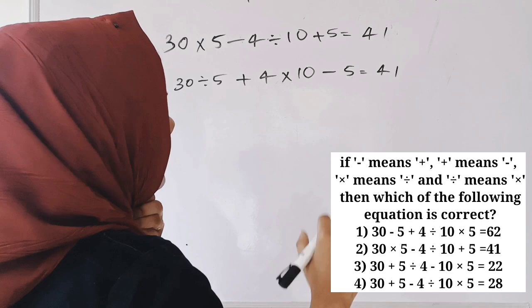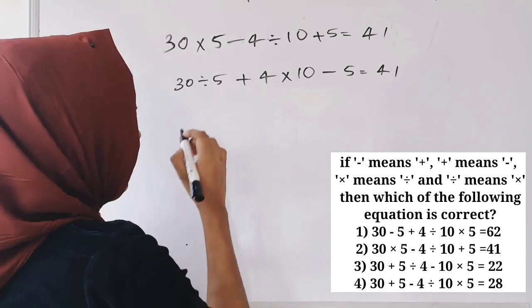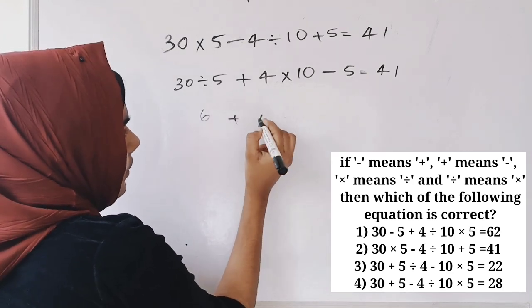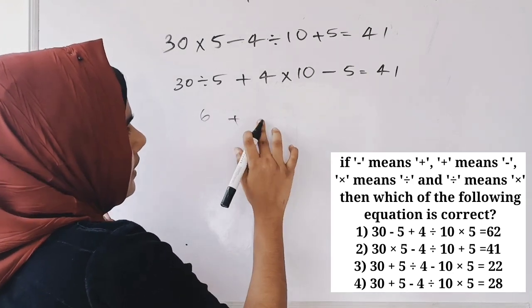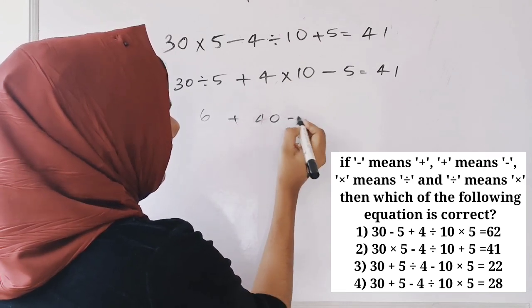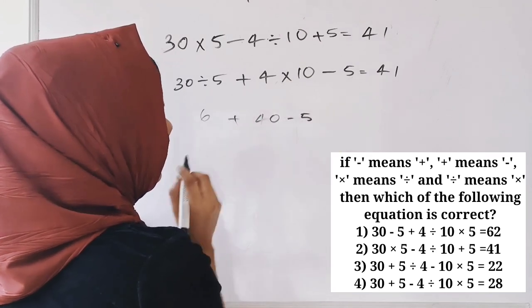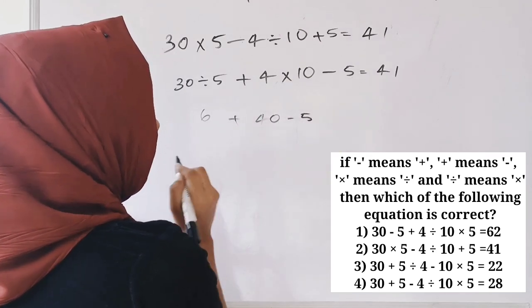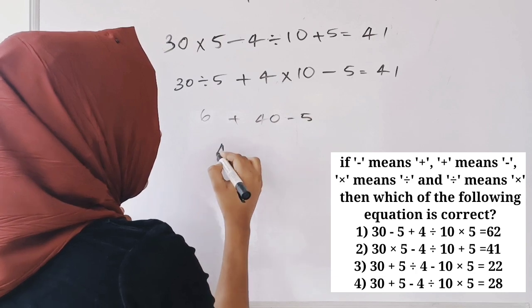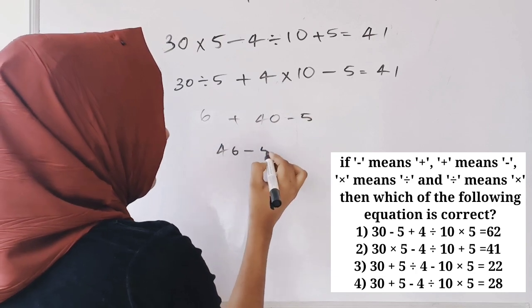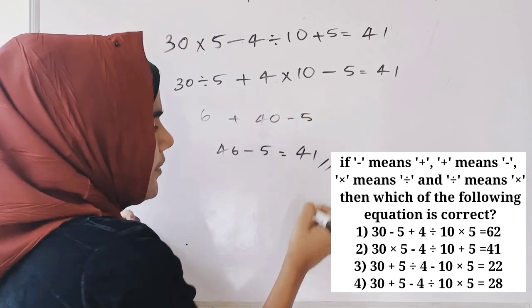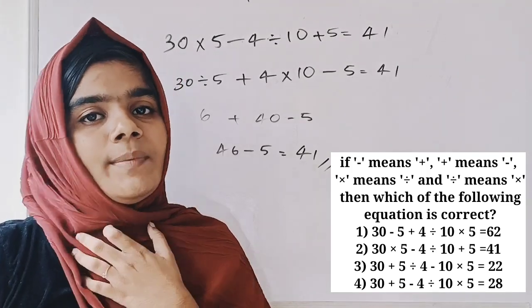Continuing the check: plus 4, plus 4 into 10, plus 4, minus 4. Then 6 plus 4 plus 4 gives 46, and 46 minus 5 is equal to 41.